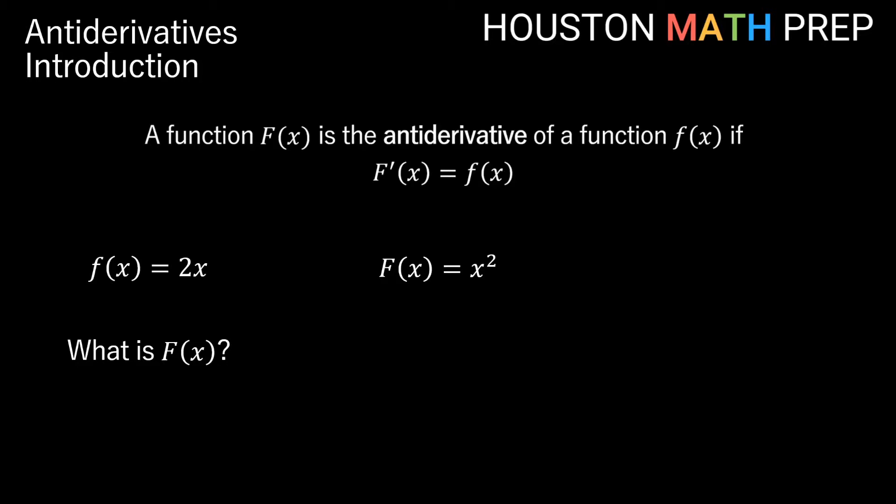But it turns out there are lots of other functions with this same derivative of 2x. We could have something like the function x squared plus 1. Taking the derivative of the x squared term would still give us 2x, and taking the derivative of the constant is going to give us 0. So we'll still have an overall derivative of x squared plus 1 being 2x.